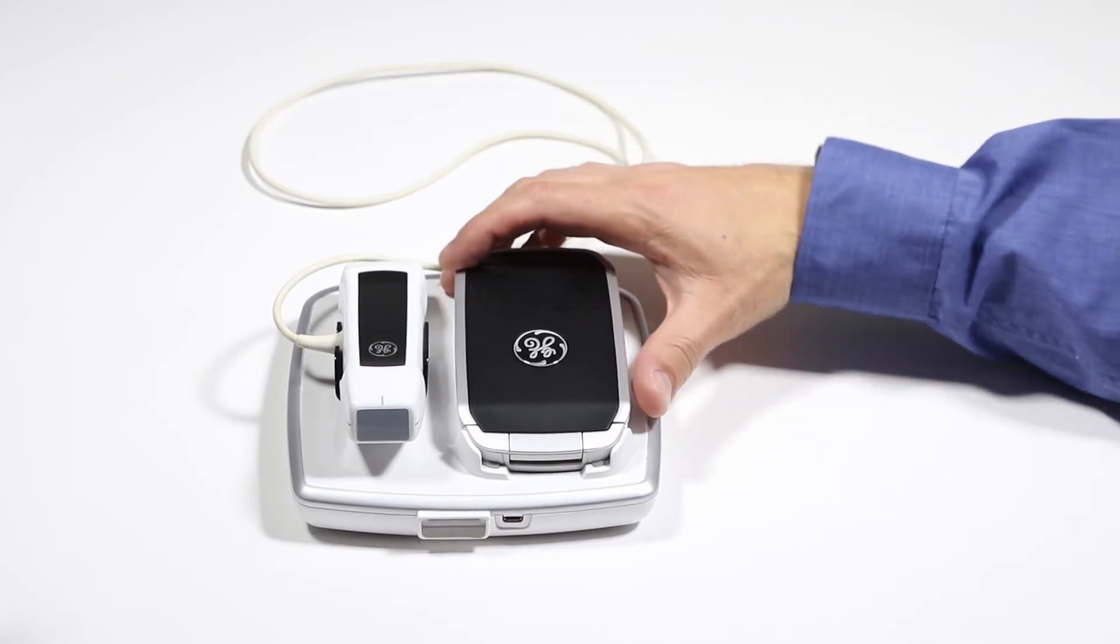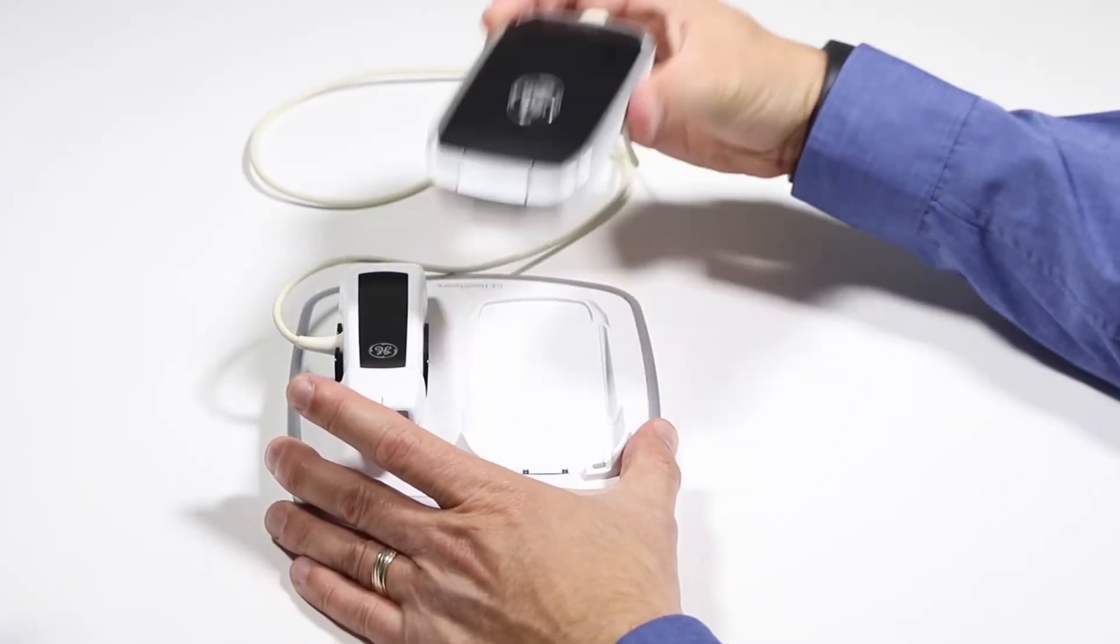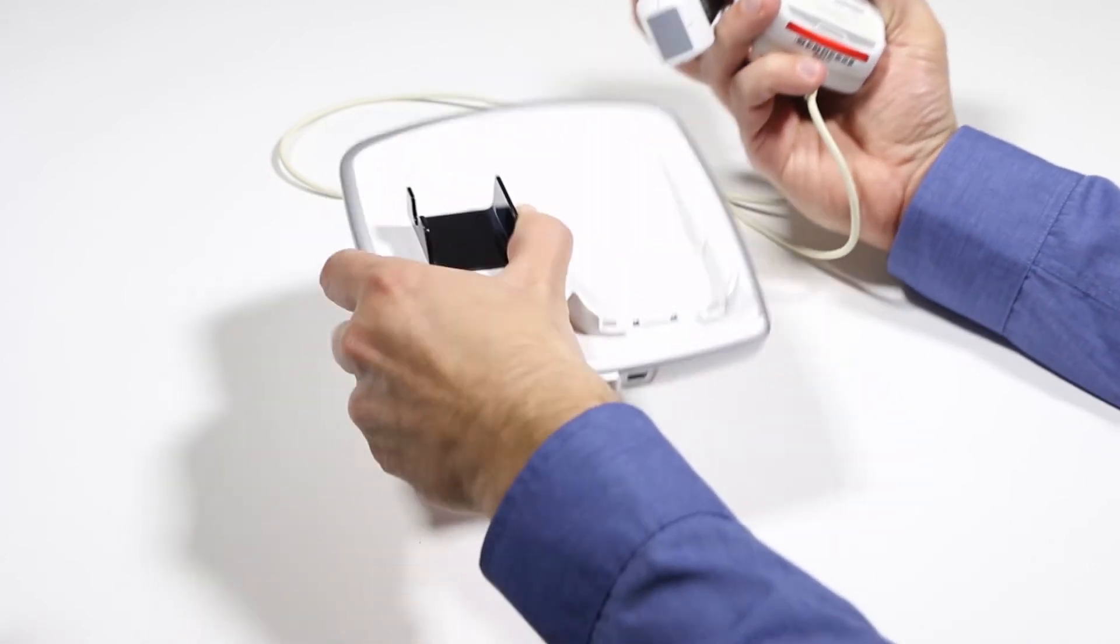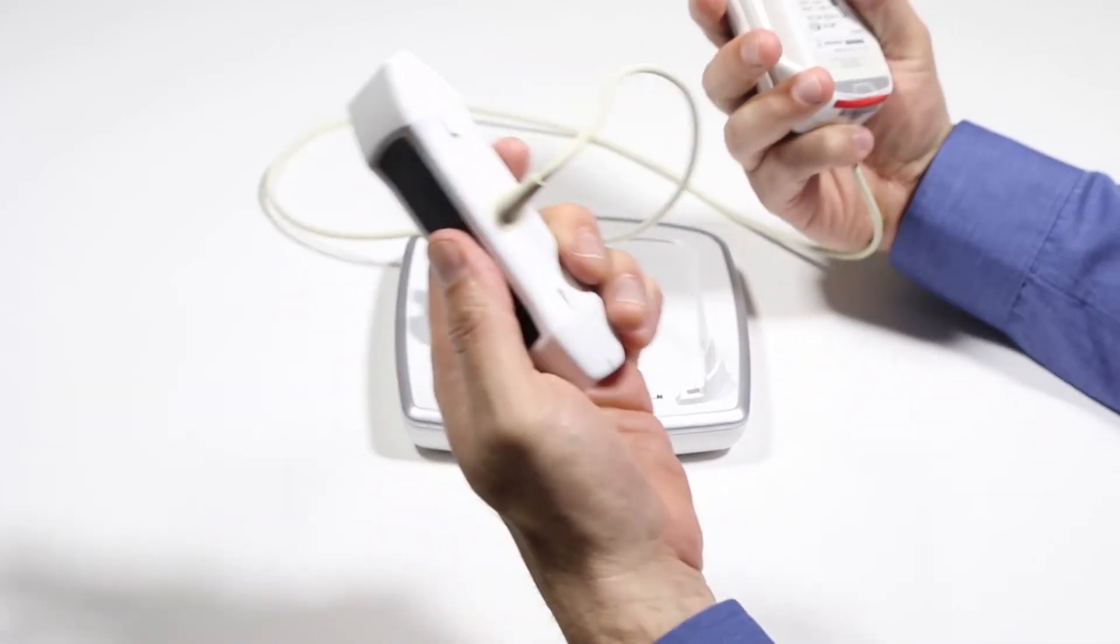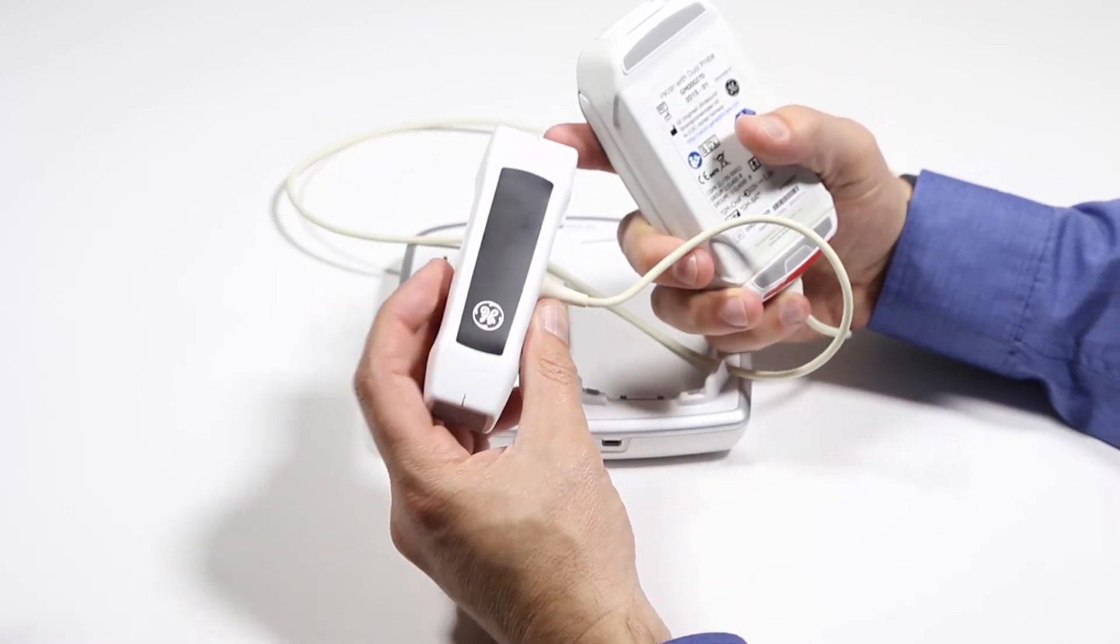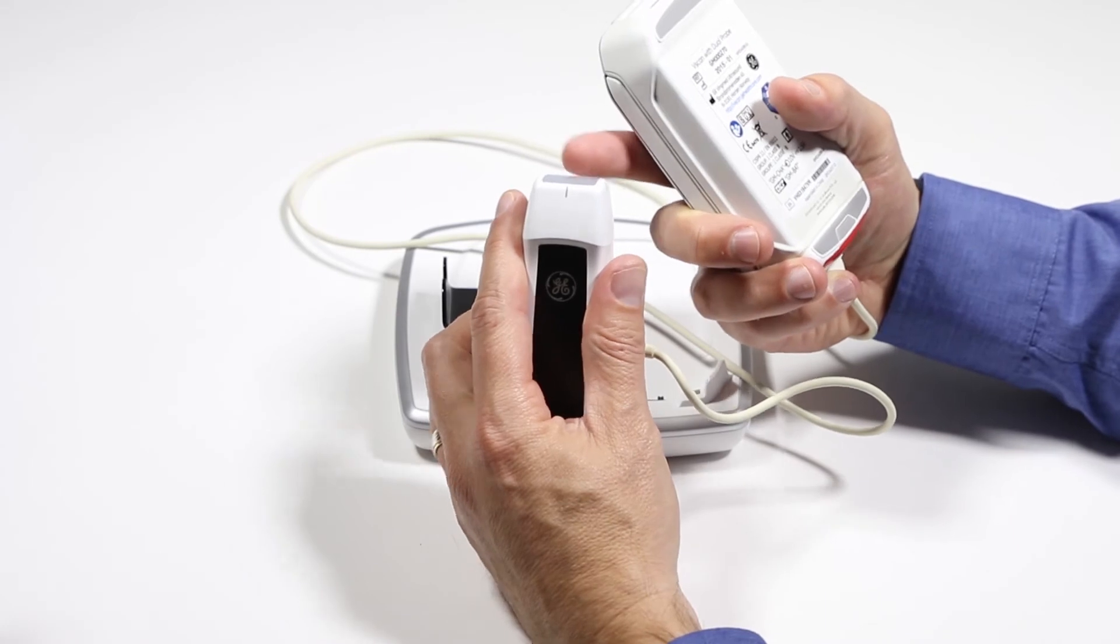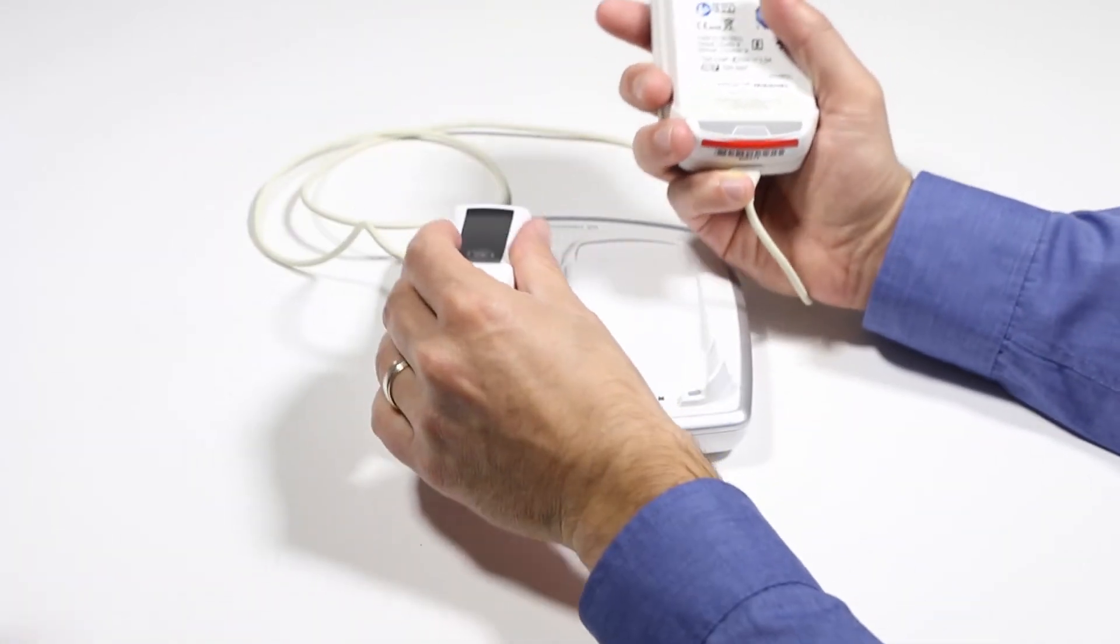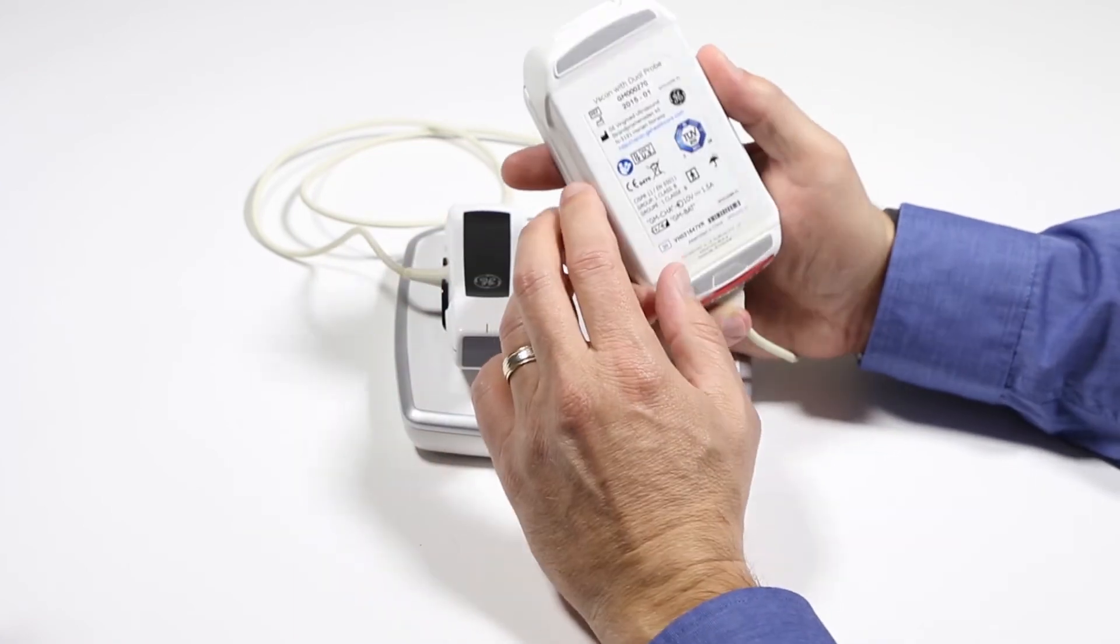From there you're ready to scan. We're going to pop it out like this. Let's take a look at the rest of the system. You have your probe. This side is your linear air, also known as the near field probe, and this is the one for penetration, which is your sector cardiac probe. We'll get into scanning with those in a later video.